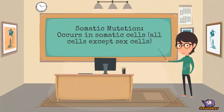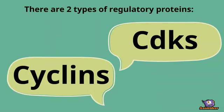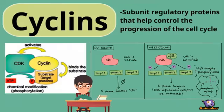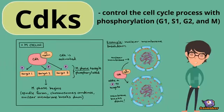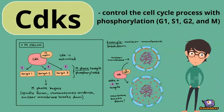Somatic mutations occur in somatic cells, but not sex cells. Two types of regulatory proteins are CDKs and cyclins. Cyclins are regulatory proteins that help control the cell cycle. CDKs control the cell cycle process with phosphorylation when cyclins bind to them.